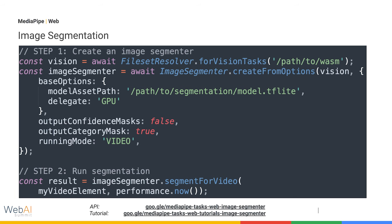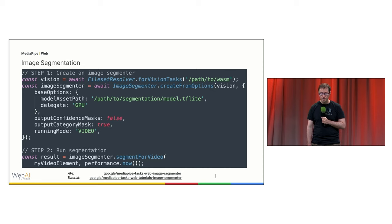Keeping image segmentation as our example, here's what an implementation might look like today. Note that most of the code here is just for specifying configuration options and paths to the WebAssembly and model files — the overall usage pattern is much simpler. First initialize an image segmenter, and then run the segmentation whenever results are needed.